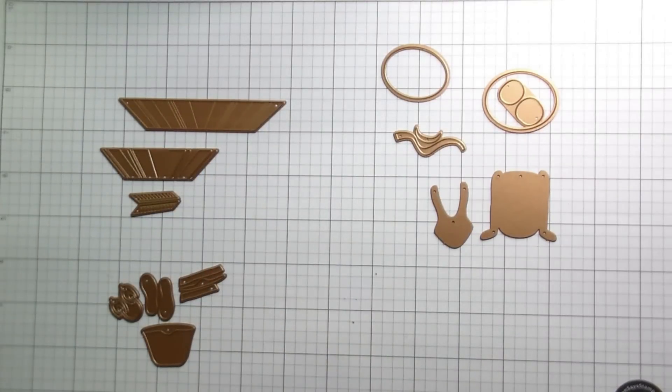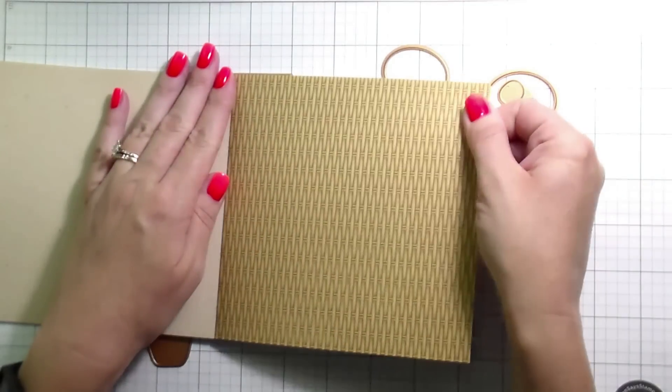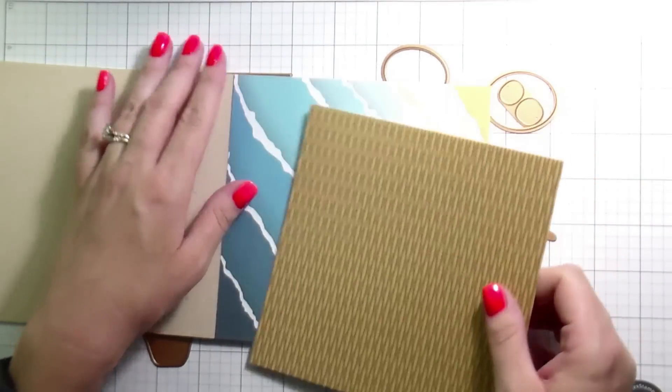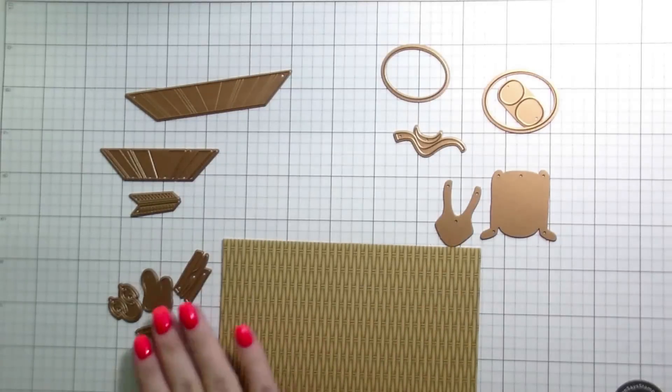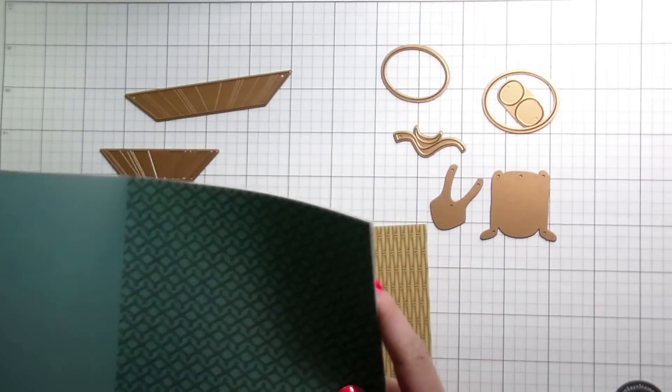So you literally would not even have to create a background to make a scene. You could just trim down that paper to your A2 or whatever size you were going for. But I am going to do some ink blending to make my own background. But I am going to use pattern papers to cut out my dies.